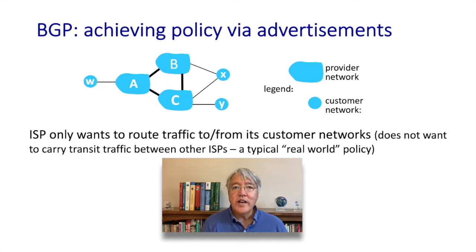Here's an example. Networks A, B, and C are provider networks, and networks X, W, and Y are customer networks. Since W is a customer of A, A is very happy to advertise the path A,W to B and C — saying, if you want to route to W, route through me, A. If A didn't advertise this, then no traffic would flow to W through A.